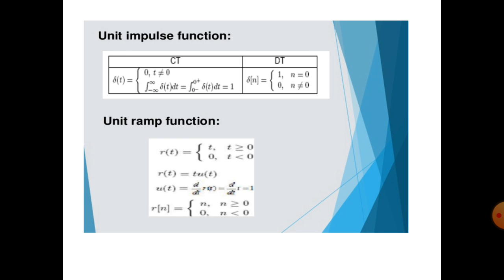The ramp function can be represented by r(t). For CT: r(t) = t for t ≥ 0, and r(t) = 0 for t < 0. This can also be written as r(t) = t · u(t), that is t multiplied by the unit step signal. By multiplying with the unit step signal we can get the ramp signal. Also, u(t) = d/dt r(t) = 1 for CT. For DT: r(n) = n for n ≥ 0, and r(n) = 0 for n < 0. This is the condition for the unit ramp function.